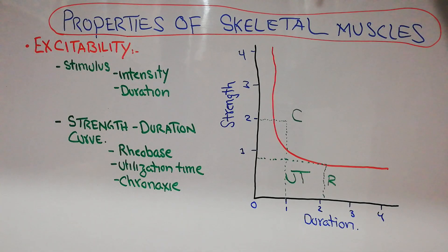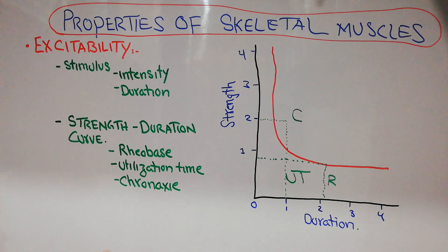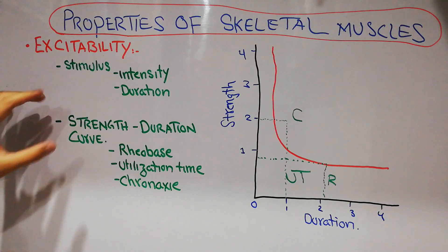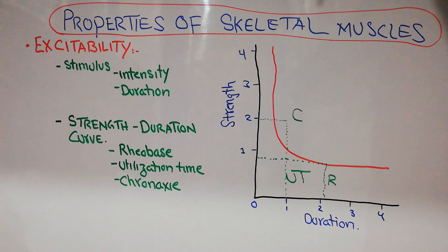The first and most important property of skeletal muscle is excitability. Excitability is defined as the reaction or response of a tissue to a stimulus. There are two main types of excitable tissue in the human body: one is the nerves or neurons, and the second is muscles. So muscles are also excitable — they respond to stimuli.